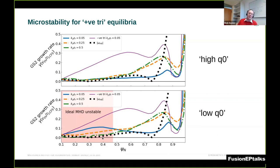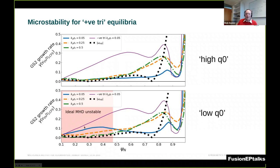Of course, one would need to run full nonlinear gyrokinetic simulations to actually estimate the transport quantities — the heat fluxes and particle fluxes — but nevertheless it looks likely that one could construct spherical tokamak equilibria with a reasonable amount of fusion power without having large growth rates. In the low q0 case there is a region unstable to the ideal ballooning mode, coinciding with a peak in the long-wavelength instability growth rate, which tells us that the on-axis safety factor can be tuned to optimize the turbulence properties of our reactors.